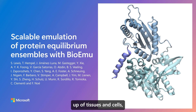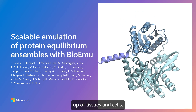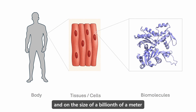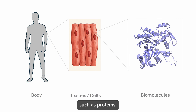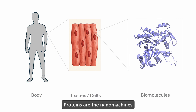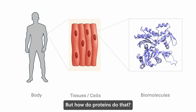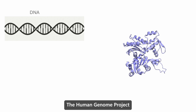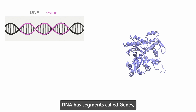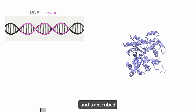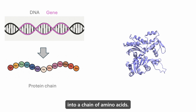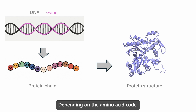Our bodies are built up of tissues and cells, and on the size of a billionth of a meter you'll find biomolecules such as proteins. Proteins are the nanomachines that make life work. The human genome project gave us the ability to sequence DNA. DNA has segments called genes, and a gene can be translated and transcribed into a chain of amino acids — this is a protein.